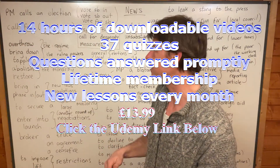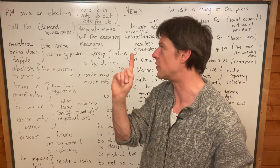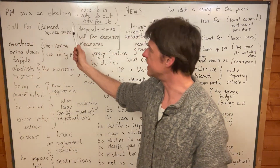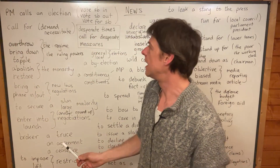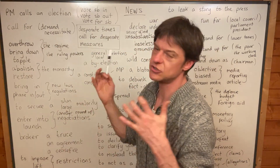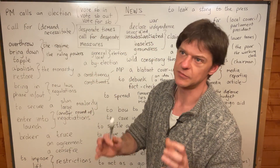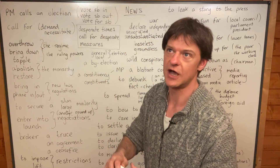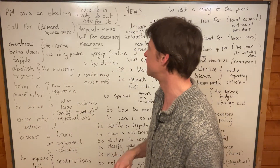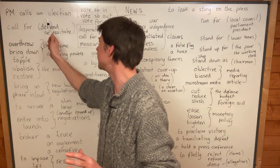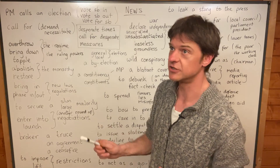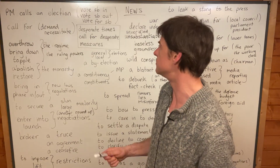It will always have 'the' in front of it because there's only one PM. So the PM calls an election, and that means he wants an election at a certain time and he decides that an election will happen in that month. So he calls an election in that month, and in the elections you get to vote.